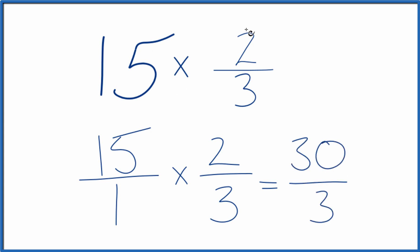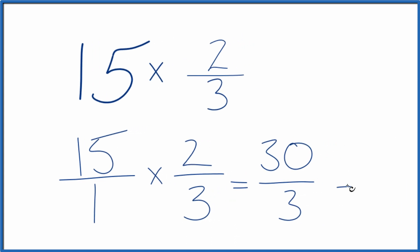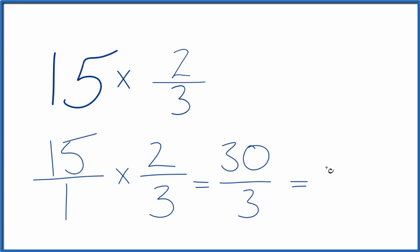So 15 times 2 thirds, that equals the fraction 30 over 3. But we can simplify this even further, because 3 goes into 30 10 times. So in answer to our question, 15 times 2 thirds, that equals 10.